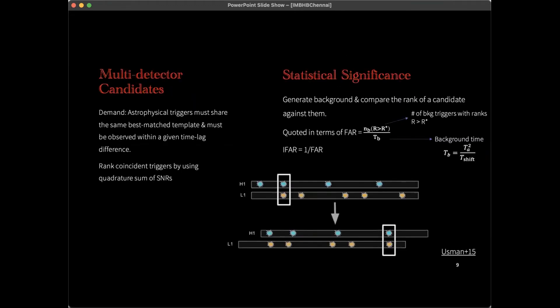So given how noisy our detectors are, you might wonder how we can assert that a given trigger is of astrophysical origin. Well, to answer that, we take clues from general relativity. We demand that if a trigger is of astrophysical origin, then it must be detected across the detector network with a time delay which is consistent with the light travel time between the detectors, and it must be described by the same best match template. We call such triggers astrophysical triggers or foreground triggers or candidate events, based on our mood, and we rank them based on the overall loudness within the detector network.